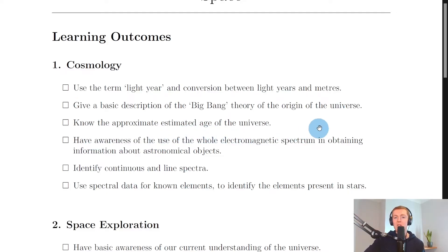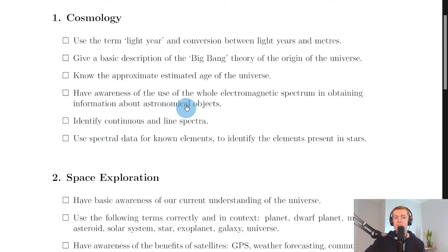It then says you need to know the approximate estimated age of the universe. So remember, the age of the universe is roughly 13.8 billion years old—not million, billion—or you could round it to 14 billion years old.